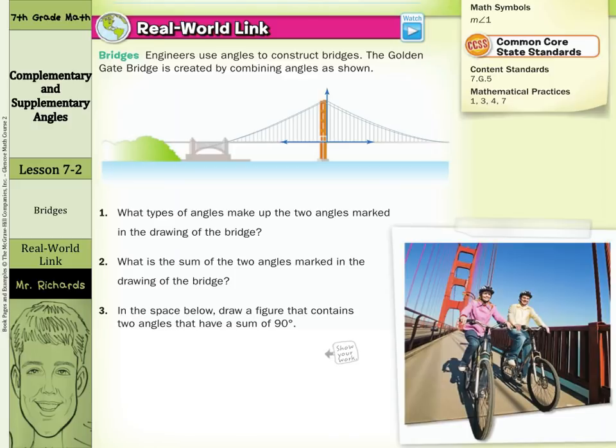What types of angles make up the two marked in the drawing of the bridge? Well, they look like they're right angles to me, and they are, so right angles.